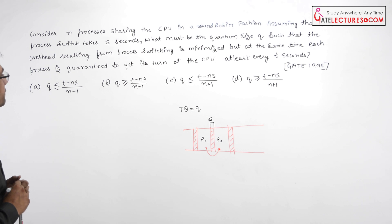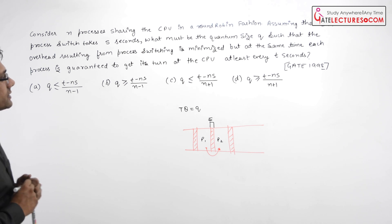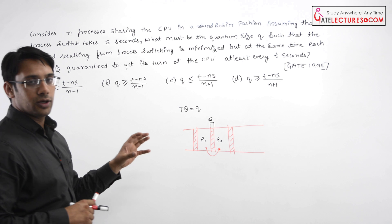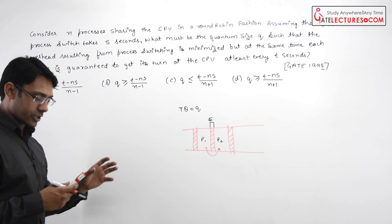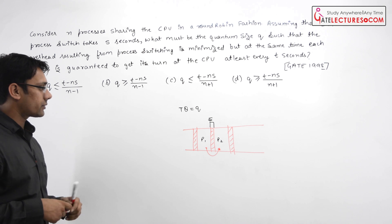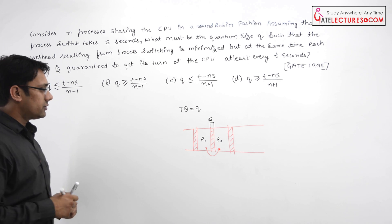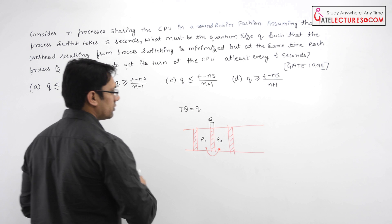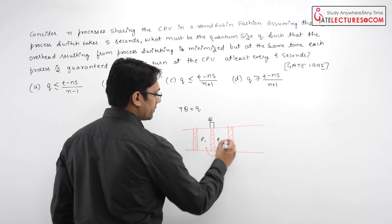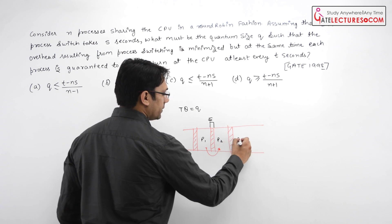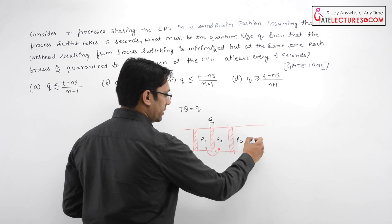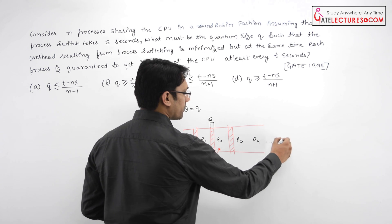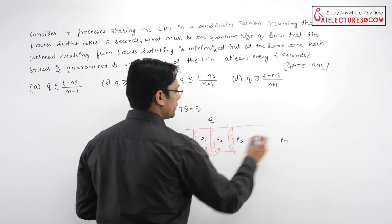And after every T seconds, a process should get a turn. We have processes P1, P2, P3, and then we execute process P4 and so on up to process Pn.